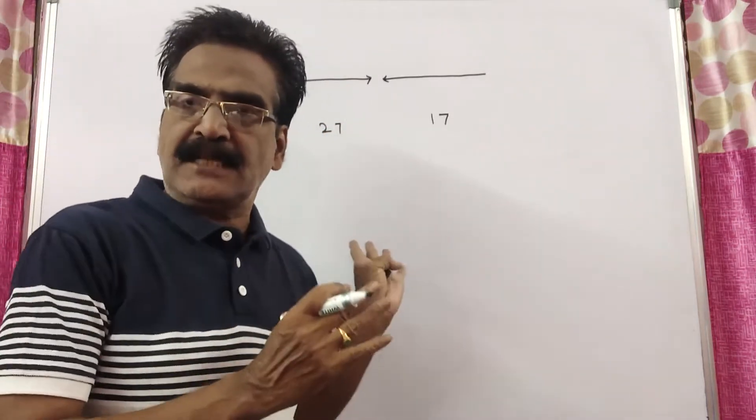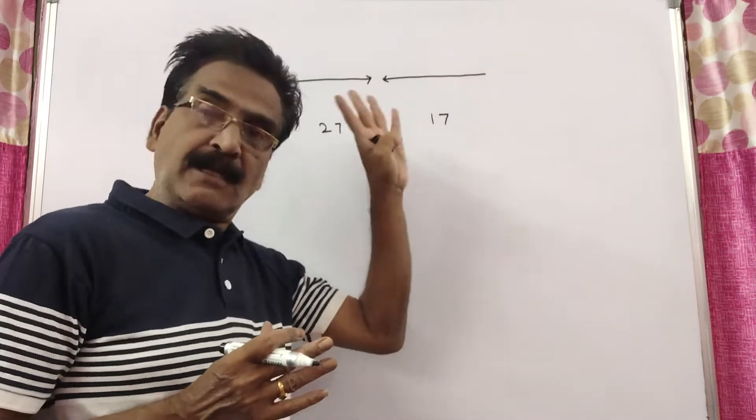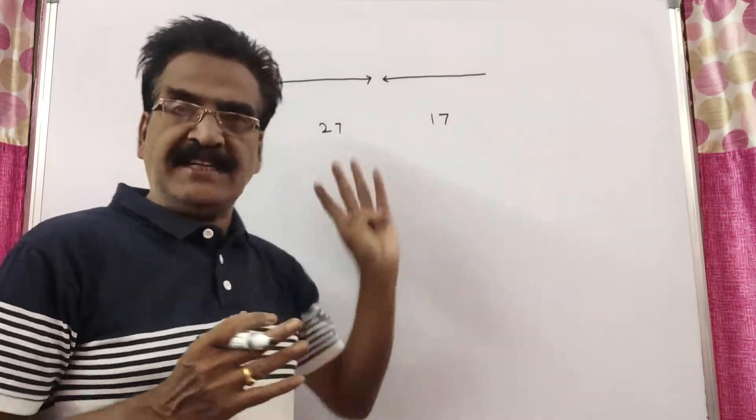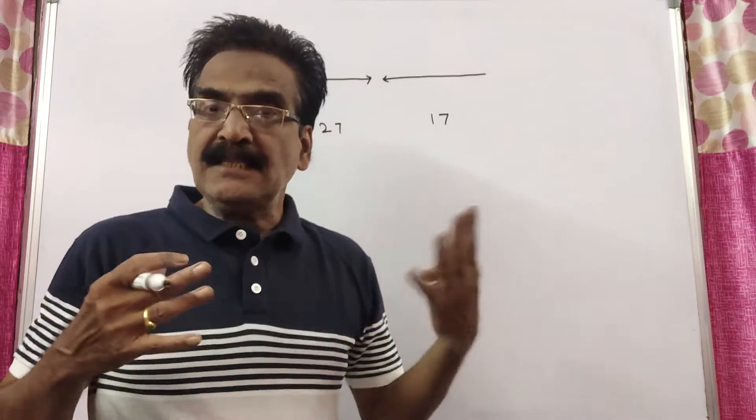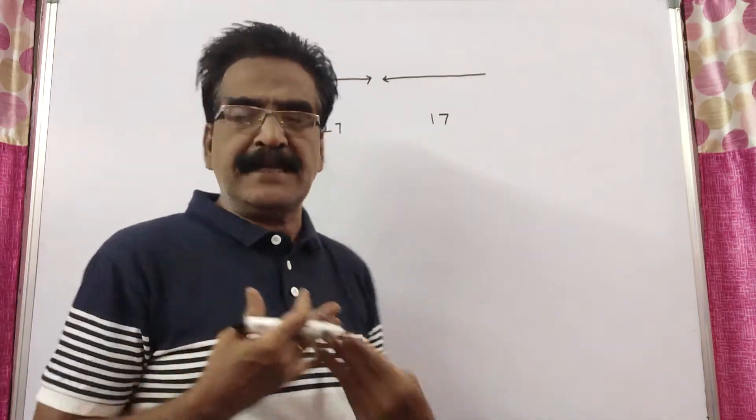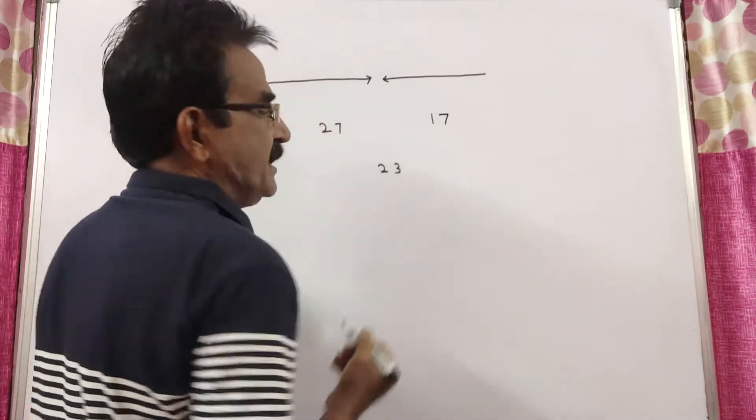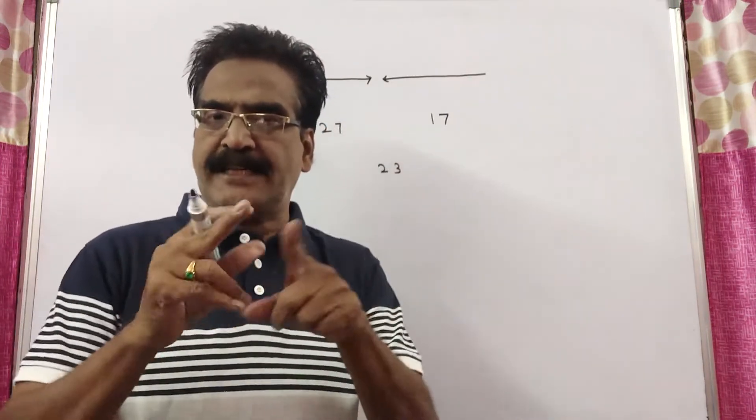That is, the first train crosses the man in 27 seconds and the second train crosses the same man in 17 seconds, and these two trains meet each other in 23 seconds. Then what is the ratio of their speeds?